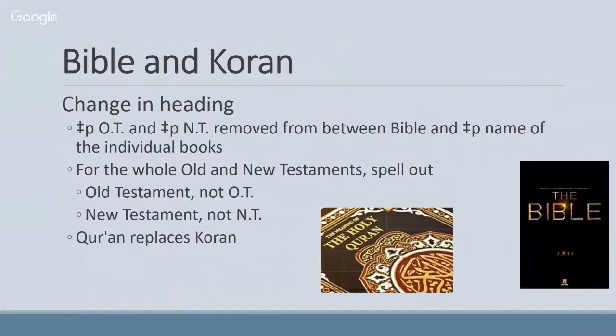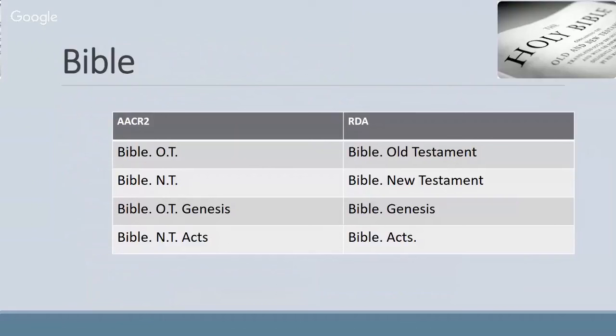There are a few other changes with Bible entries. This slide gives an overview — you'll see abbreviations are spelled out. And if you are dealing with just a particular book in the Bible, you no longer indicate if it's an Old Testament book or a New Testament book — you just put the name of the work. That's a little change between AACR2 and RDA.